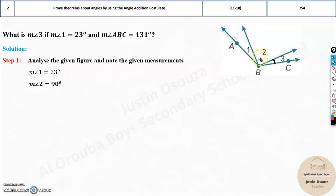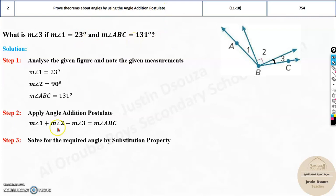1 is given. 2 is not given, but you must know 2 is 90 degrees. And then total angle is, that is measure of angle ABC, that is 131. Now what do you do? Apply the angle addition postulate. What it says is, if you add 1, 2 and 3, the total sum must be equal to the 131.